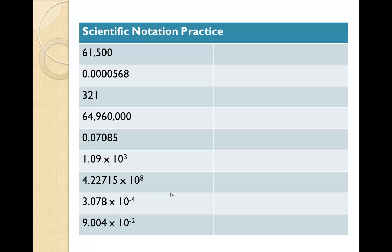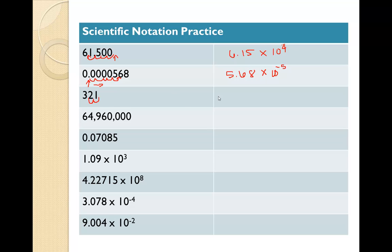Let's do some practice problems. For a large number, the invisible decimal is at the end — moving it four places gives 6.15 times 10 to the fourth. For a small number with a written decimal, moving it to the right five places gives 5.68 times 10 to the negative 5. Another example: moving two spots gives 3.21 times 10 to the second. Moving seven places gives 6.496 times 10 to the seventh. Moving two places to the right for a small number gives 7.085 times 10 to the negative 2.